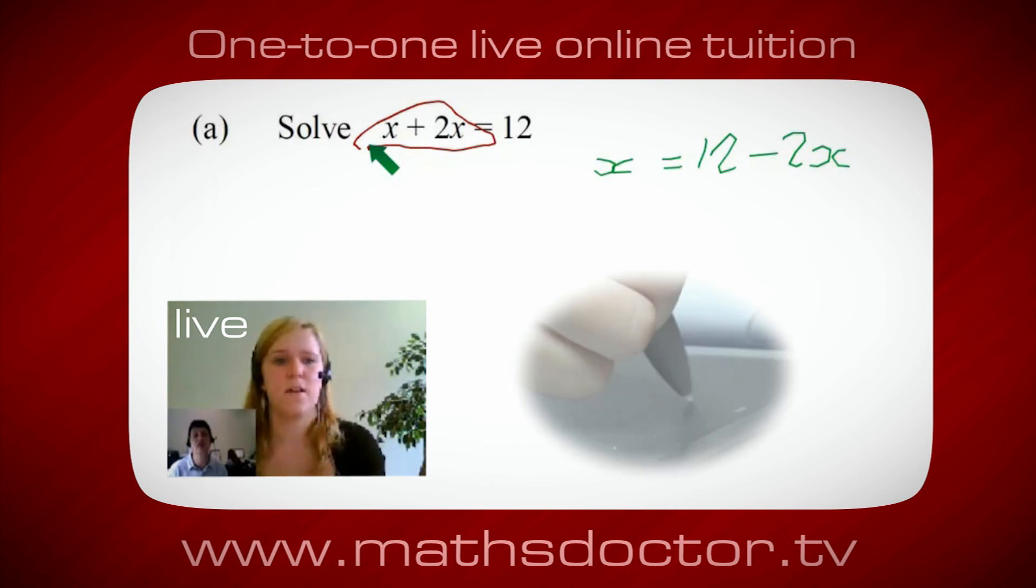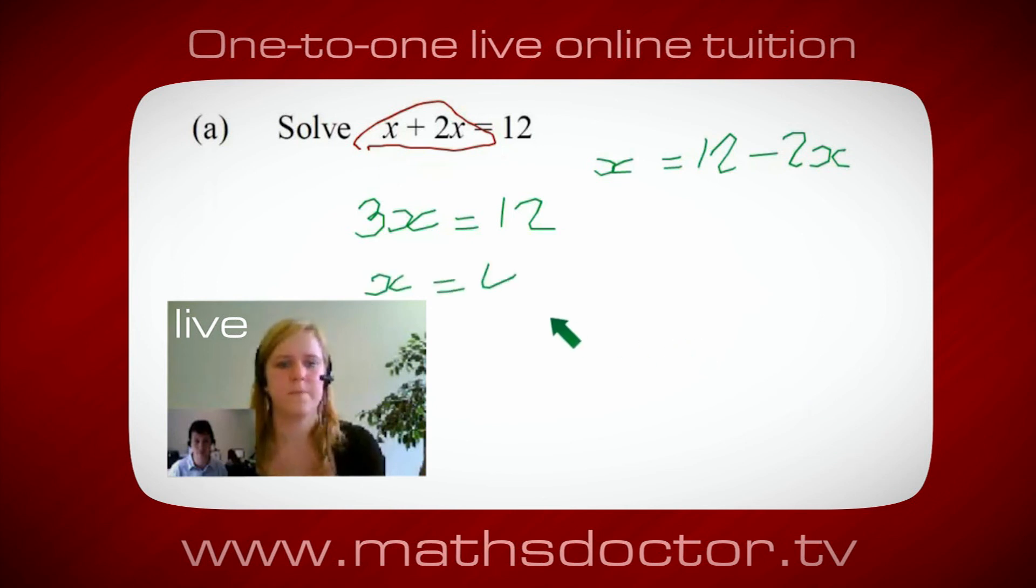Oh, okay, it's 3x, isn't it? Yeah, absolutely. So 3x equals 12. Oh, and so x equals 4.